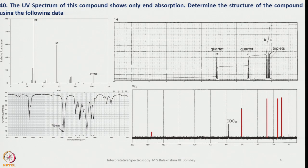Problem 40: the UV spectrum of this compound shows only end absorption. We need to determine the structure using the following data. The data provided includes the mass spectrum with the parent molecular ion peak, 1H NMR, IR spectrum, and 13C NMR.